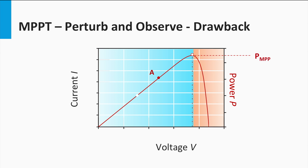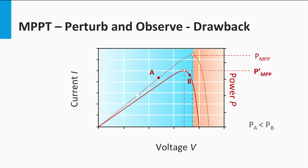In the latest perturbation, the algorithm has determined that the MPP lies to the right of point A, and hence the next step is a perturbation to converge towards the MPP accordingly. However, as the illumination changes rapidly before the next perturbation, the next perturbation shifts the operating point to B, while the new MPP actually moves to the left of B. This can be severely erroneous because the algorithm has now reached a point B such that the power at B is larger than at A.